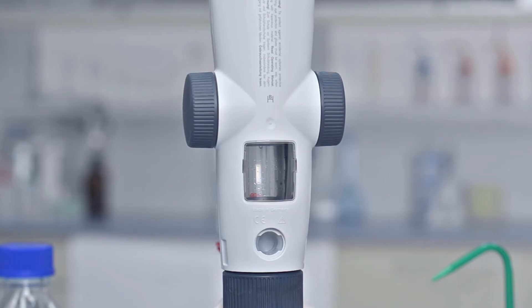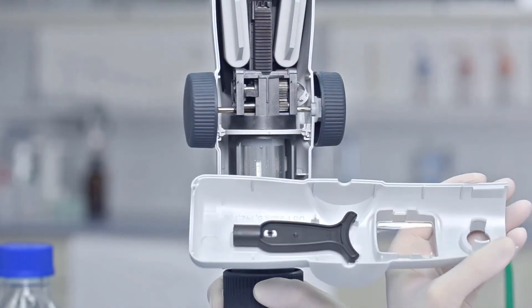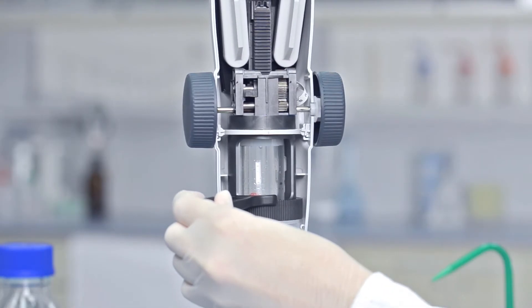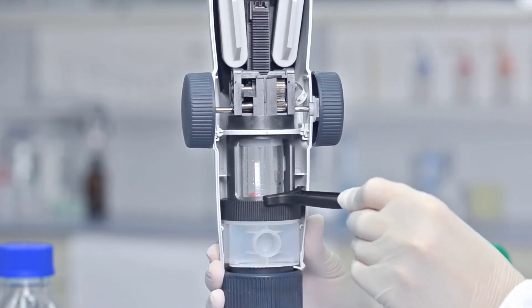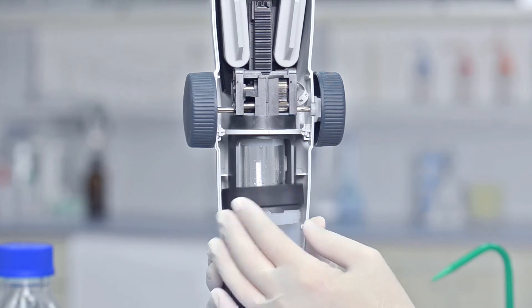Unscrew the air vent cap and open the housing. Remove the mounting tool from the rear housing and use it to loosen the safety ring on the dispensing cartridge. Then unscrew it completely by hand.